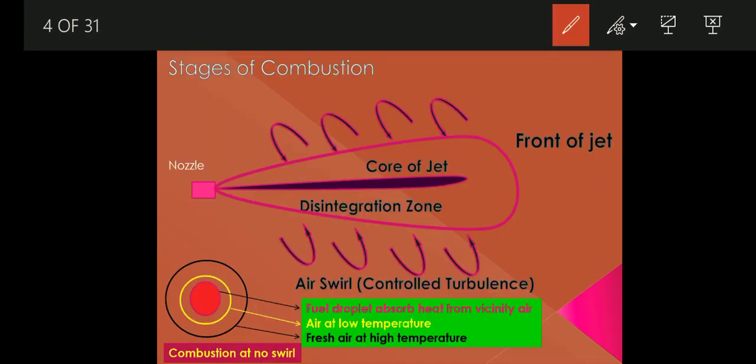In the figure, the red circle shows a fuel droplet. It absorbs heat from surrounding air, shown by the yellow ring. The fuel droplet needs more heat to achieve self-ignition temperature. Because of no swirl, the yellow ring forms a barrier to heat transfer from the black ring, which is at a higher temperature, to the fuel droplet.